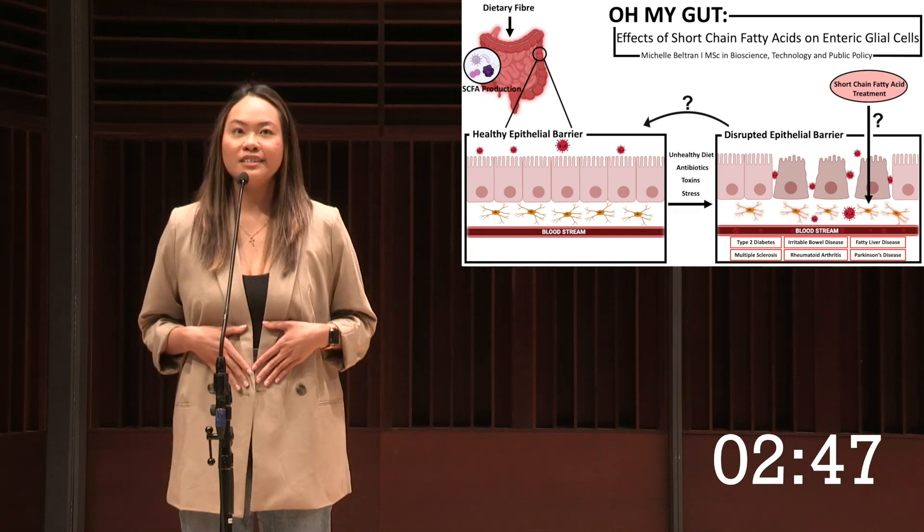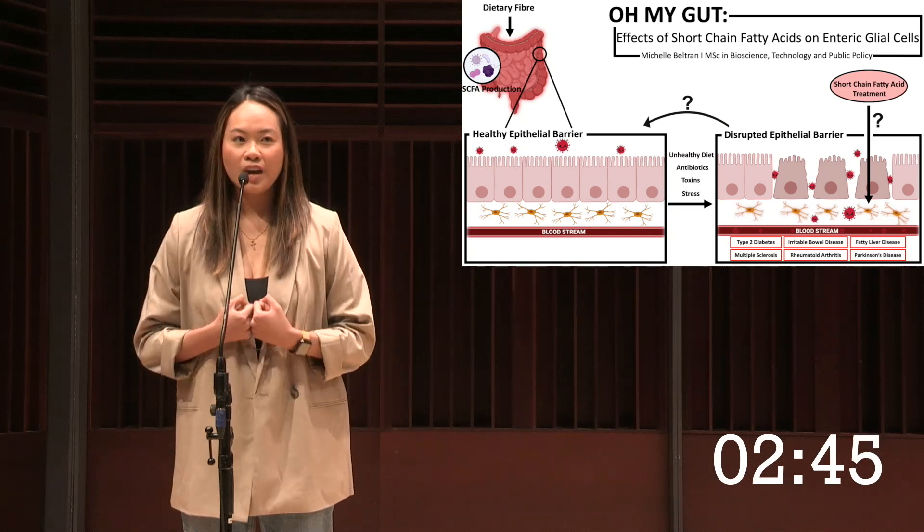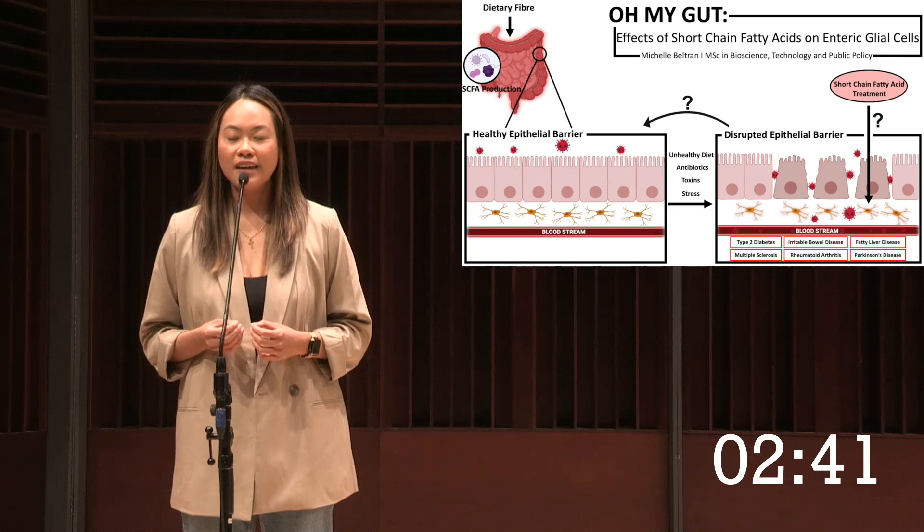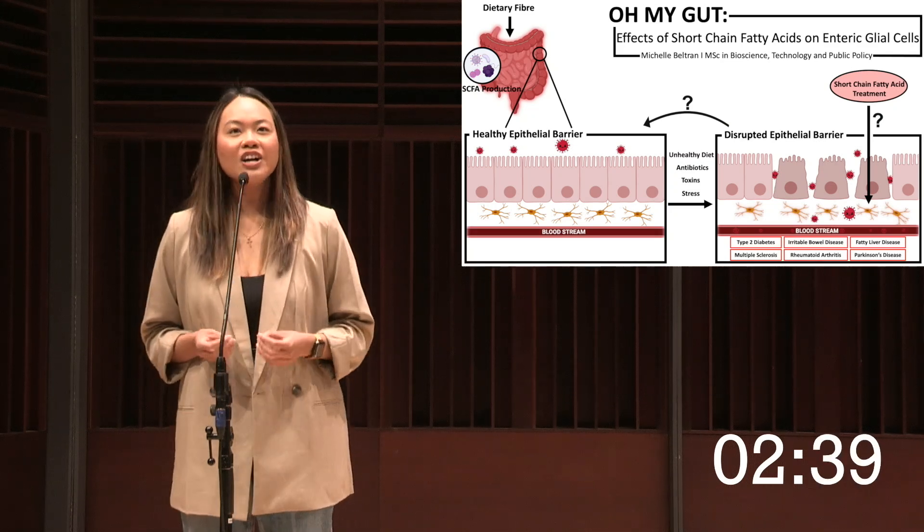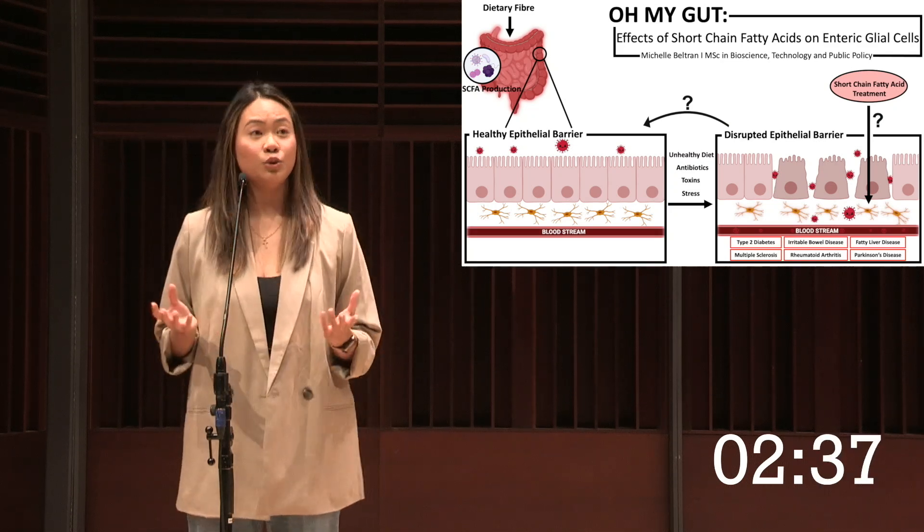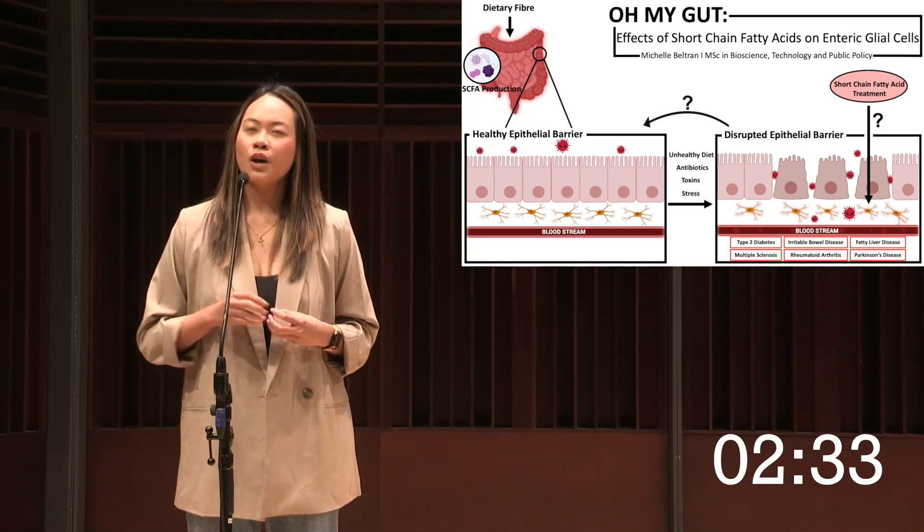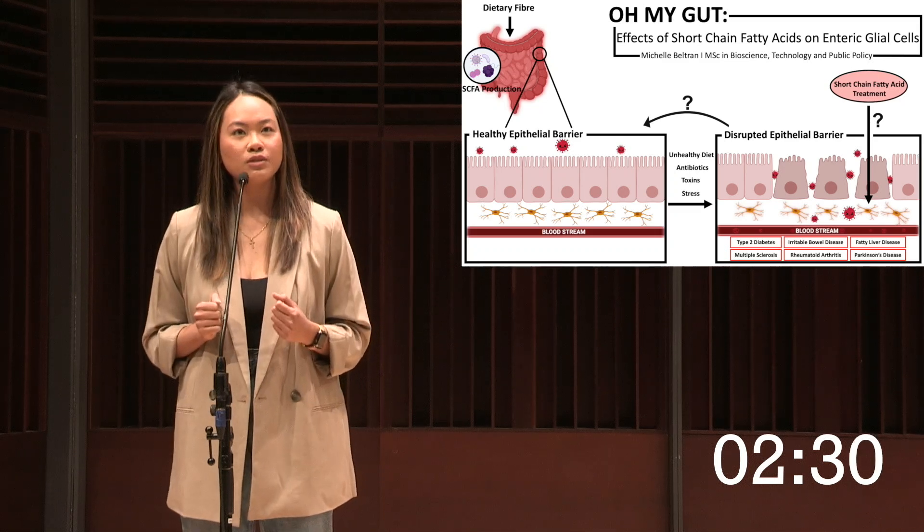You see, within our gut is a protective barrier made of tightly packed cells known as epithelial cells. You can think of this epithelial barrier as a piece of cheesecloth. Normally, holes are small allowing only nutrients through while keeping pathogenic bacteria and toxins out.